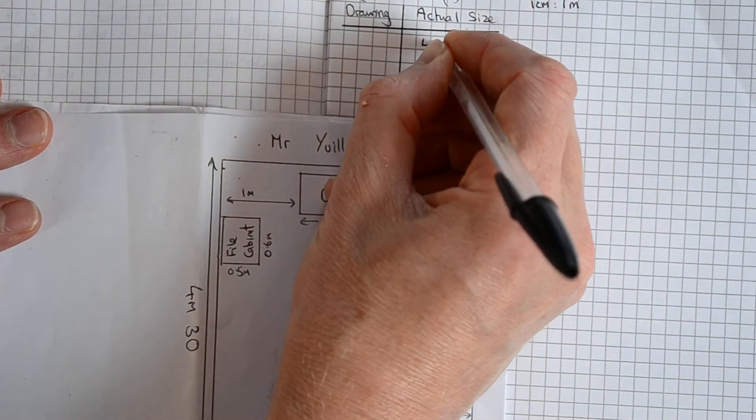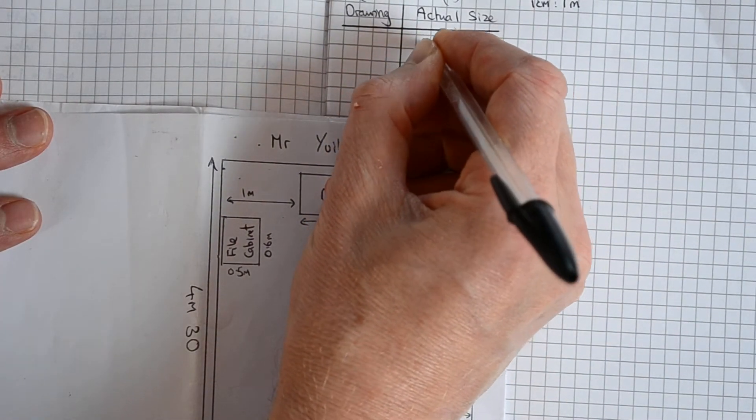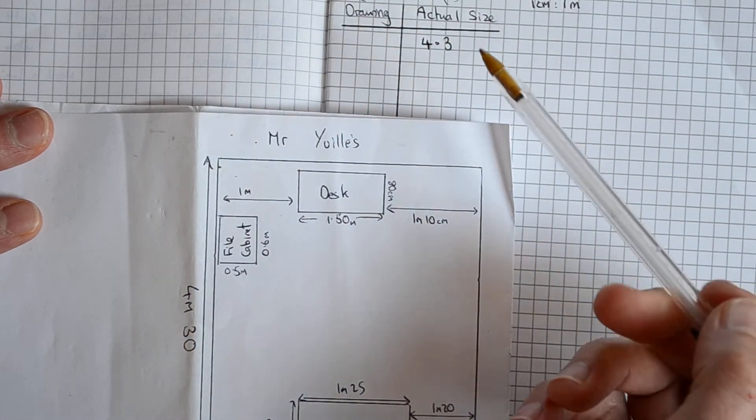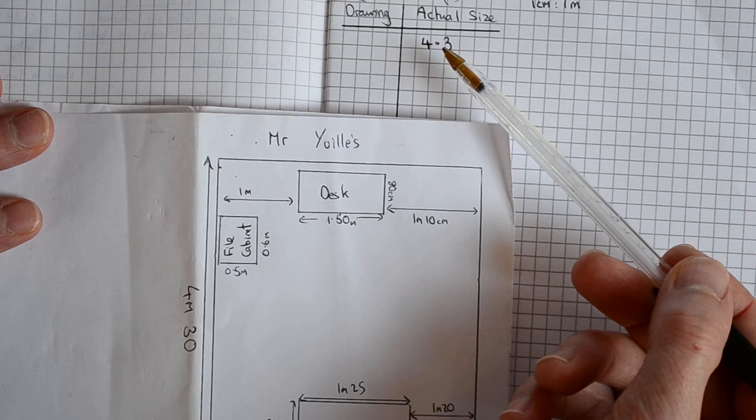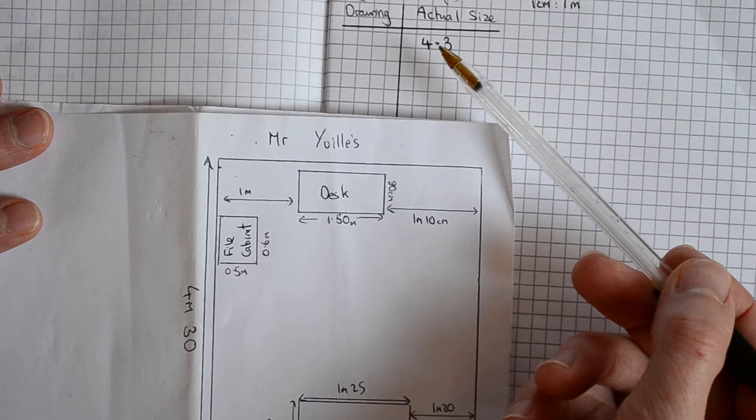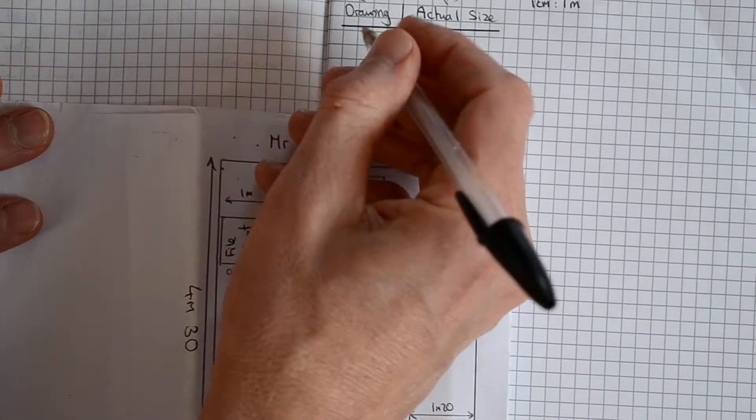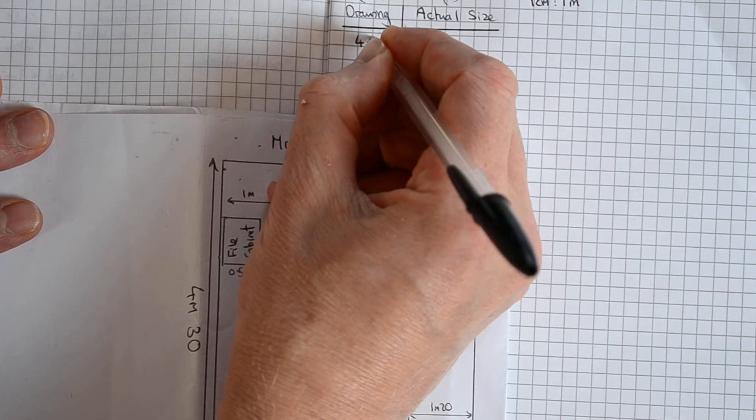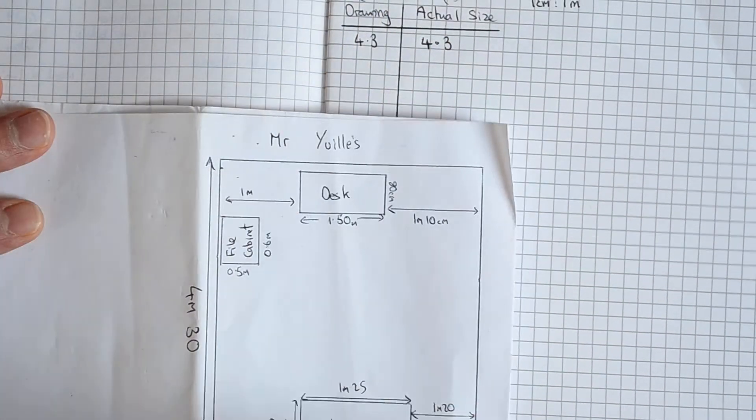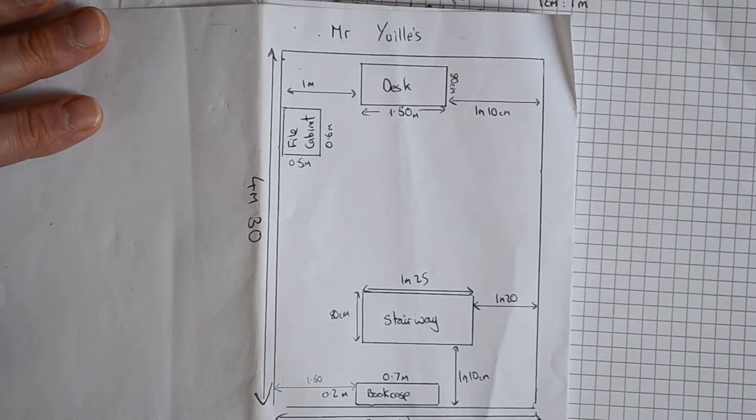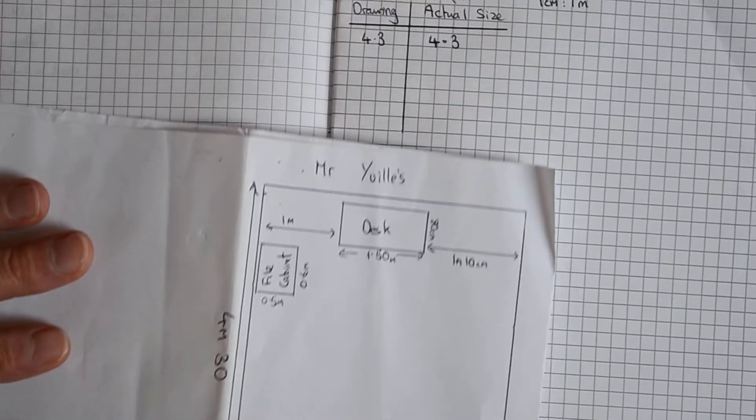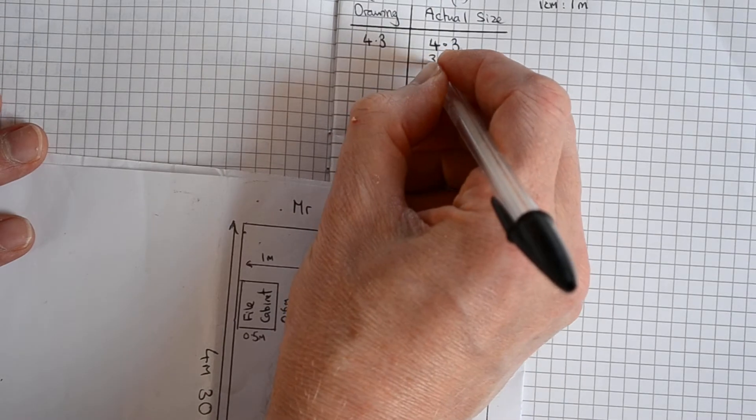So the actual size 4 meters 30, if I put that in meters that's 4.3 meters. On the drawing, one meter is 1 centimeter, so 4.3 meters is going to be 4.3 centimeters. Similarly, the width of the workspace, 3 meter 60, that's 3.6 meters in real life, 3.6 centimeters on the diagram.